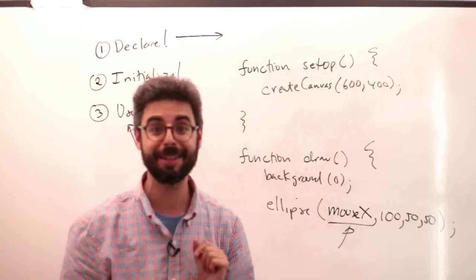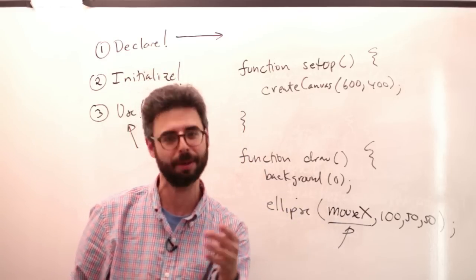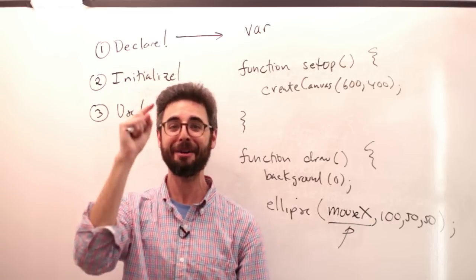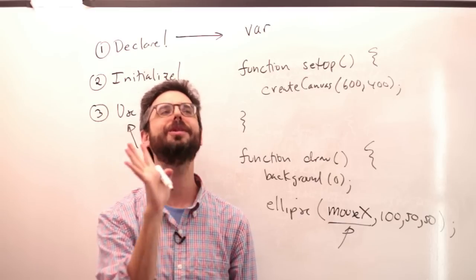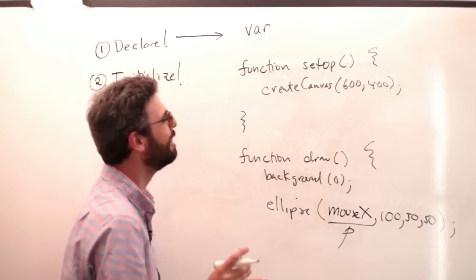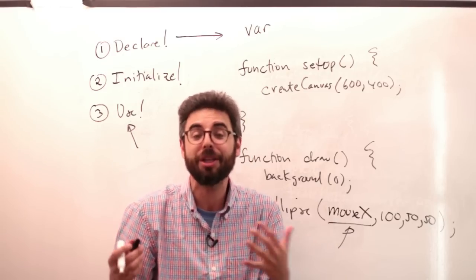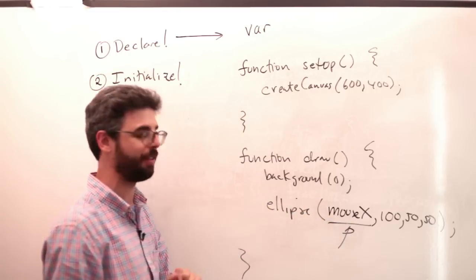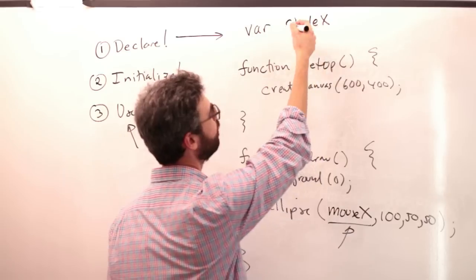Declaring is actually something quite simple. All you have to do is write the term VAR - V-A-R - which stands for variable. This is how you do it in JavaScript; other languages, it's different. VAR means I am now about to declare a variable. The next thing I have to do is give that variable a name, and that name can be absolutely anything I choose. Rainbow is a nice name for a variable, but ultimately you want to name it with something associated with what you intend the variable to do. So what I intend to do with this variable is use it as the X position of this circle - so I might call it circleX.